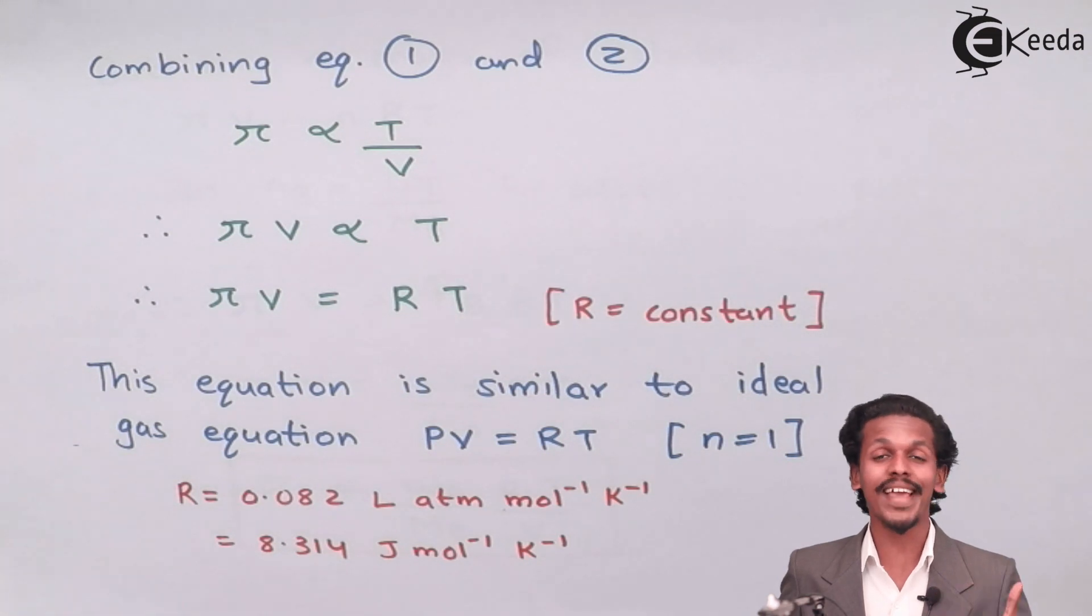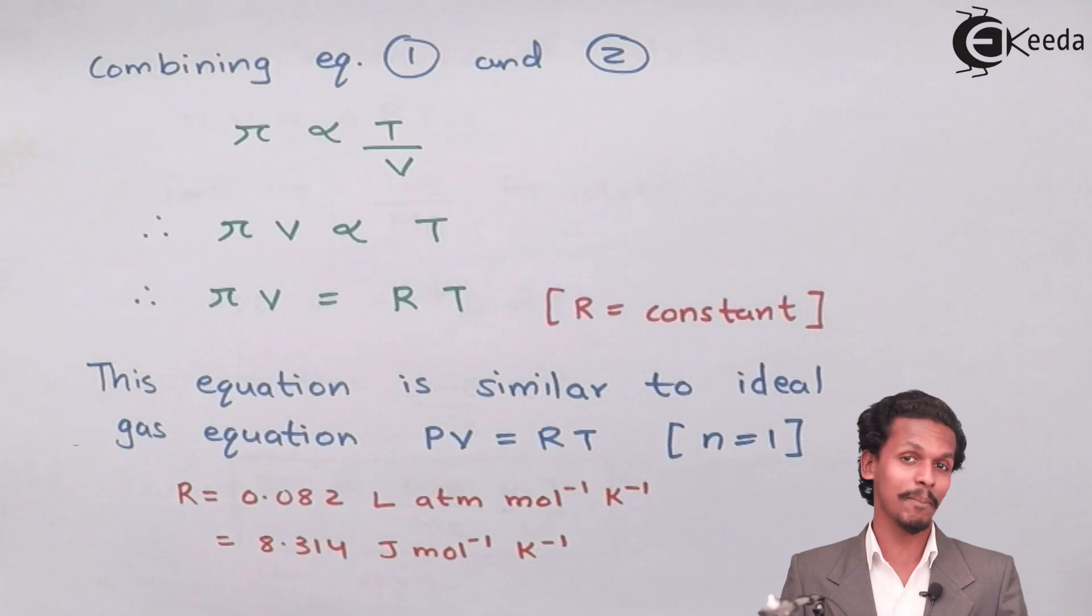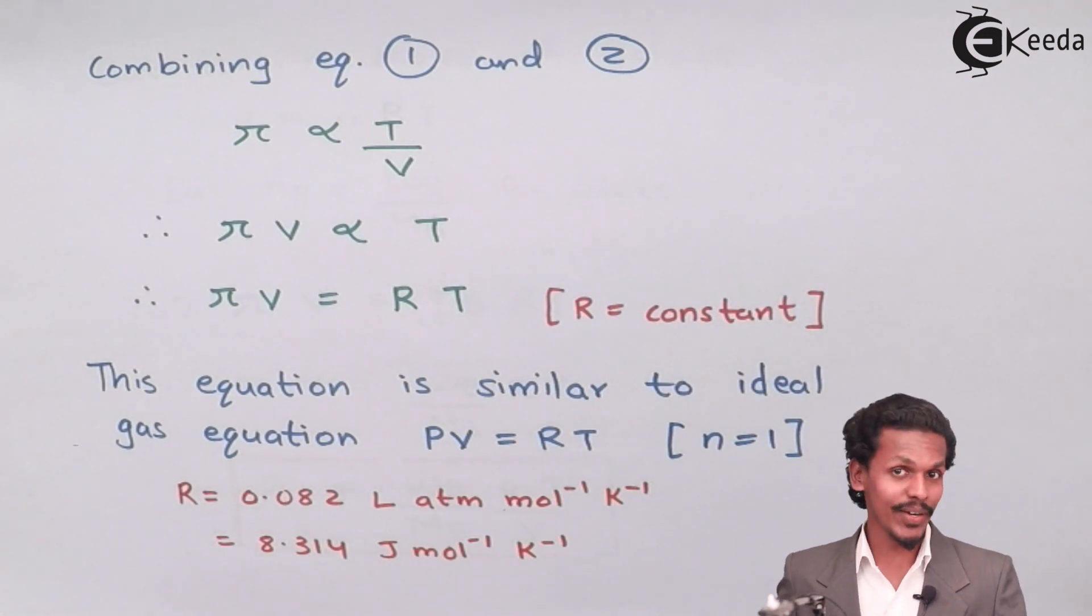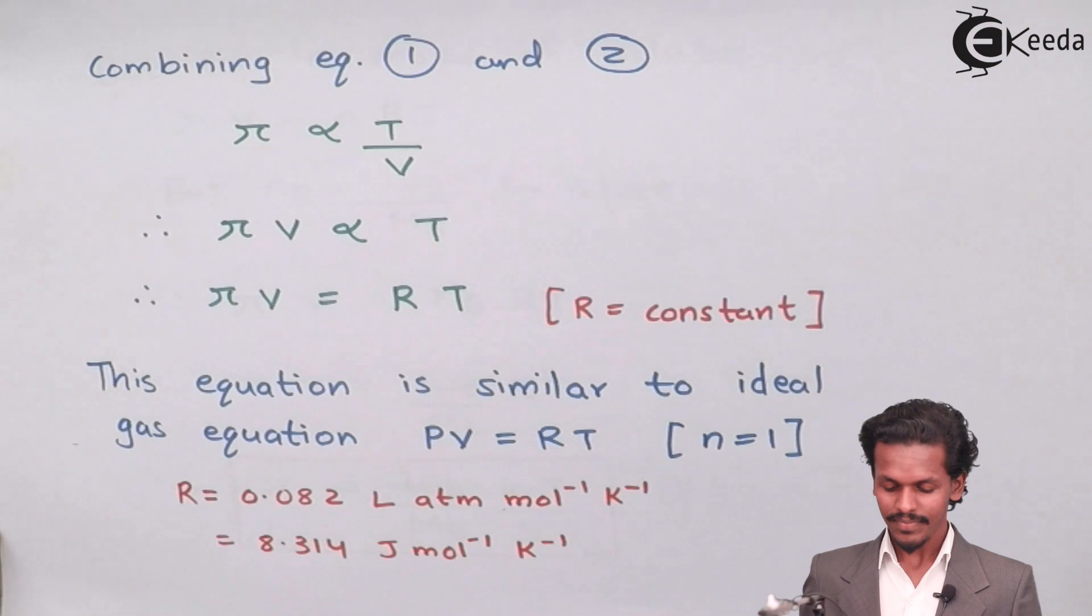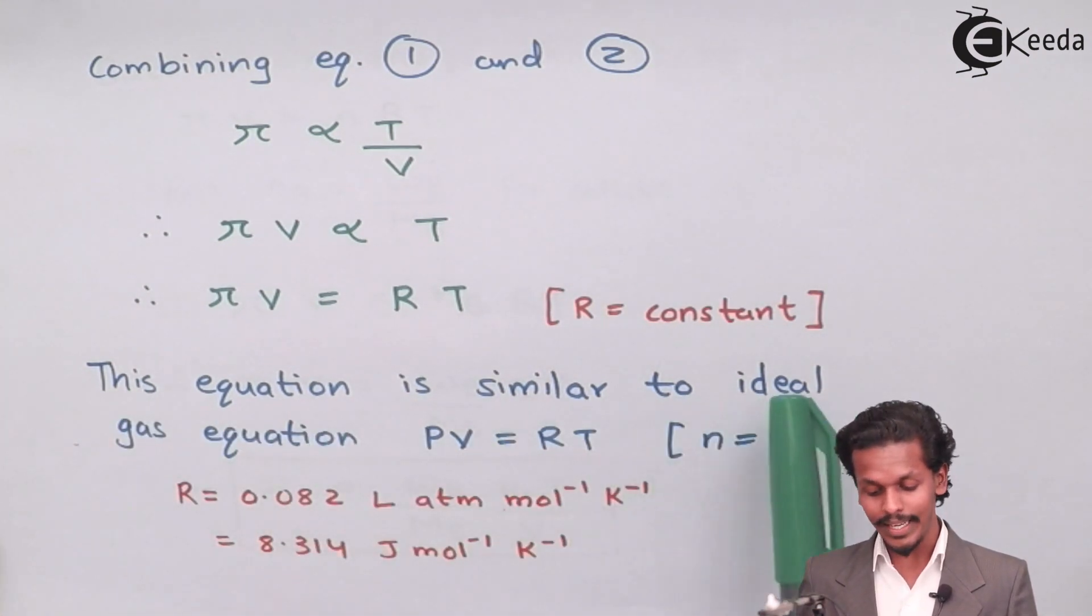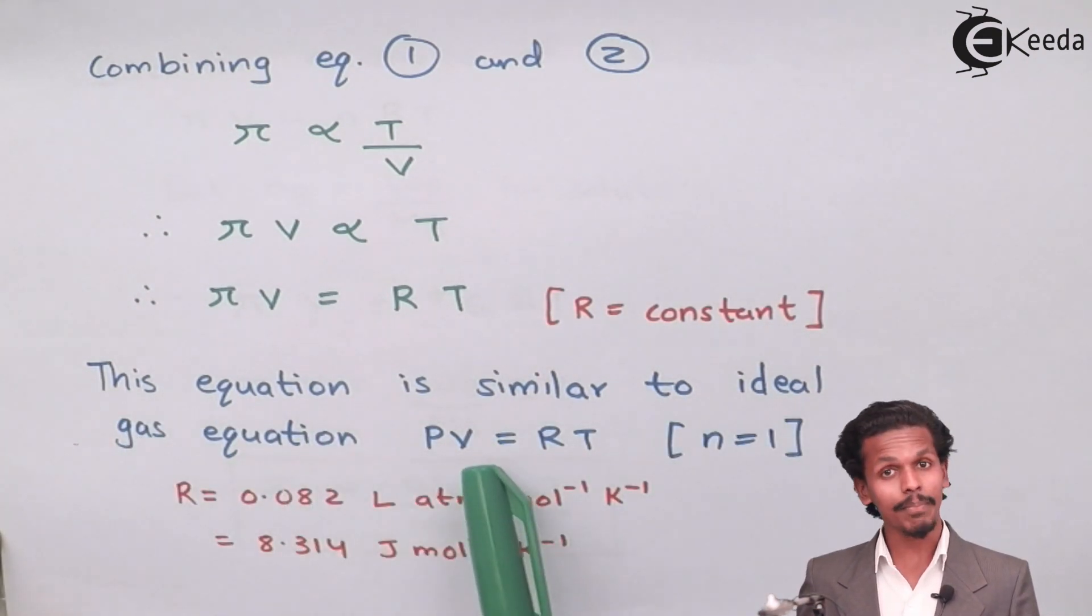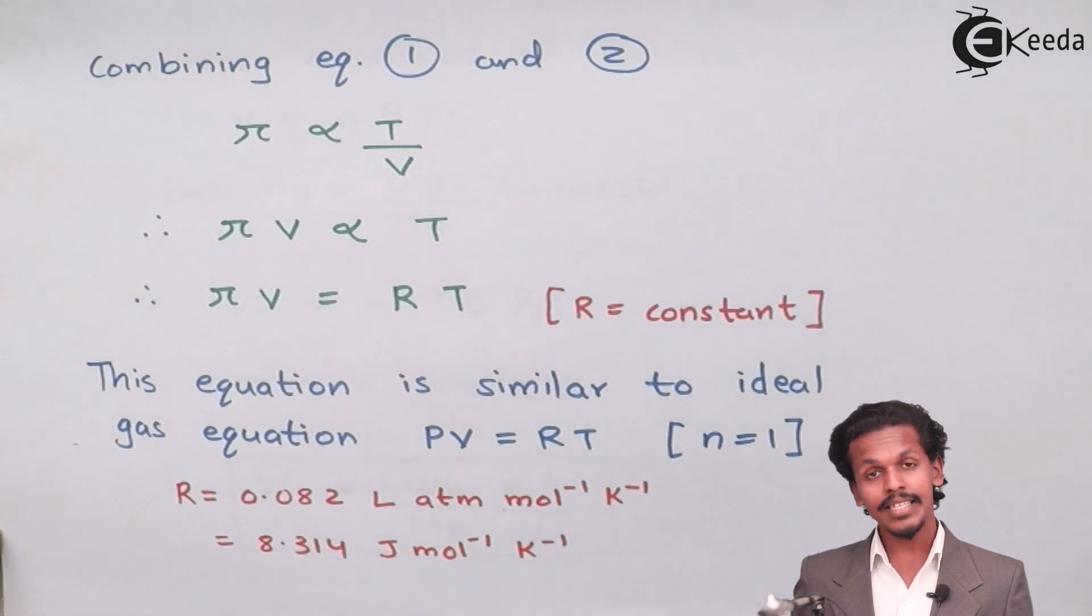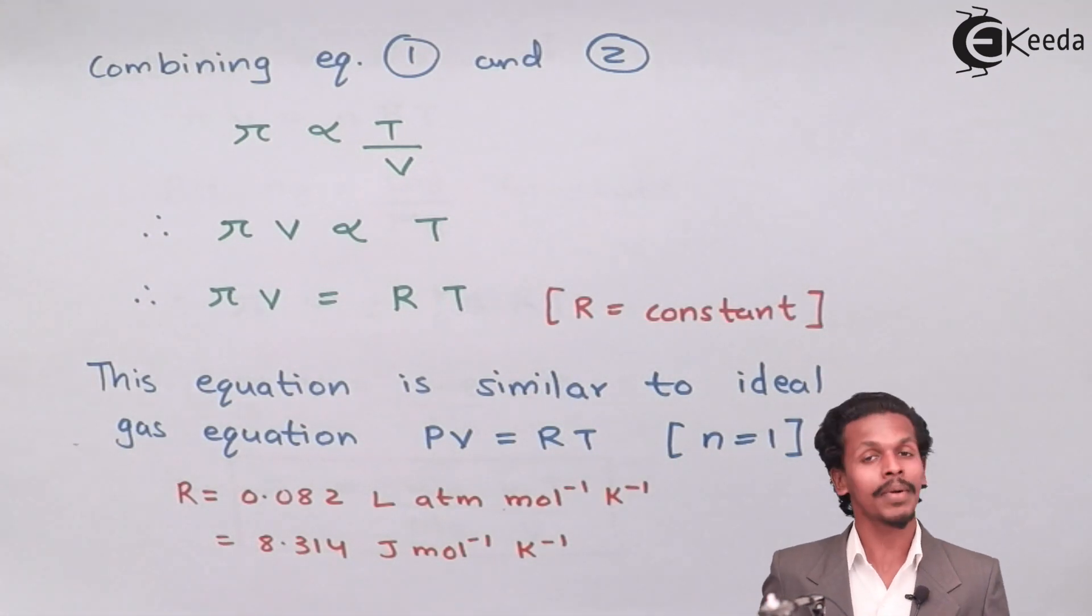This equation is similar to ideal gas equation where PV equals RT. The π stands for osmotic pressure while P stands for pressure, so both are almost the same. In this case, we know that PV equals nRT, but here n equals 1, meaning the number of moles of solute is 1.